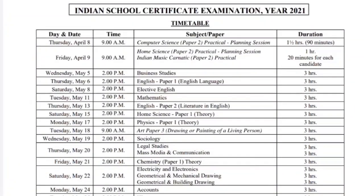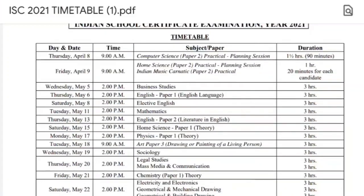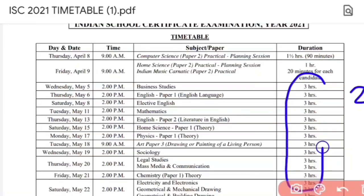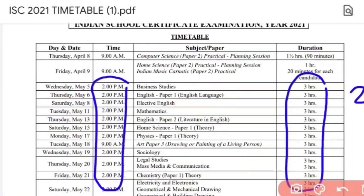This is the timetable for Class 12 board examinations. The board examinations start from 5th of May for both Class 10 and Class 12 students. The theory paper is of 3 hours for Class 12, while Class 10 students get 2 hours. The theory paper starts at 2 p.m. in the afternoon.